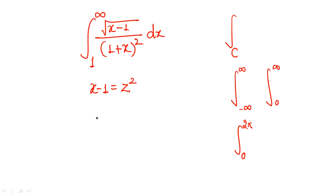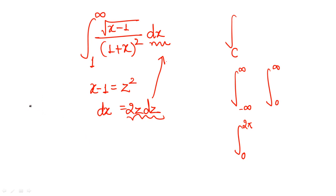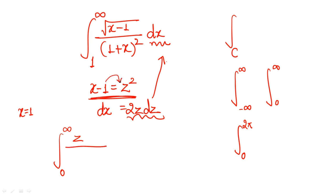So we consider x minus 1 equal to z squared, giving dx equal to 2z dz. For the limits: when x equals 1, z equals 0; when x equals infinity, z equals infinity. Replacing x minus 1 with z squared, x becomes 1 plus z squared. The integrand becomes z over (1 plus z squared) squared, and dx is replaced by 2z dz. So the integral becomes: integration from 0 to infinity of 2 · z squared over (2 plus z squared) squared dz.